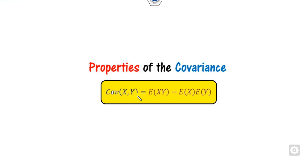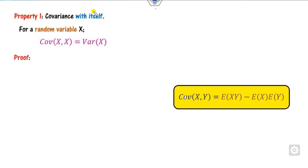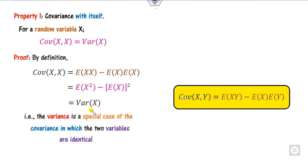Now we will describe the various properties of covariance. The first property is covariance with itself. When you find the covariance of x with x — that is, when y is the same as x — the covariance is nothing but the variance. So variance is just a special case of covariance: whenever y equals x, we call it variance; when y is not x, we call it covariance between two variables.